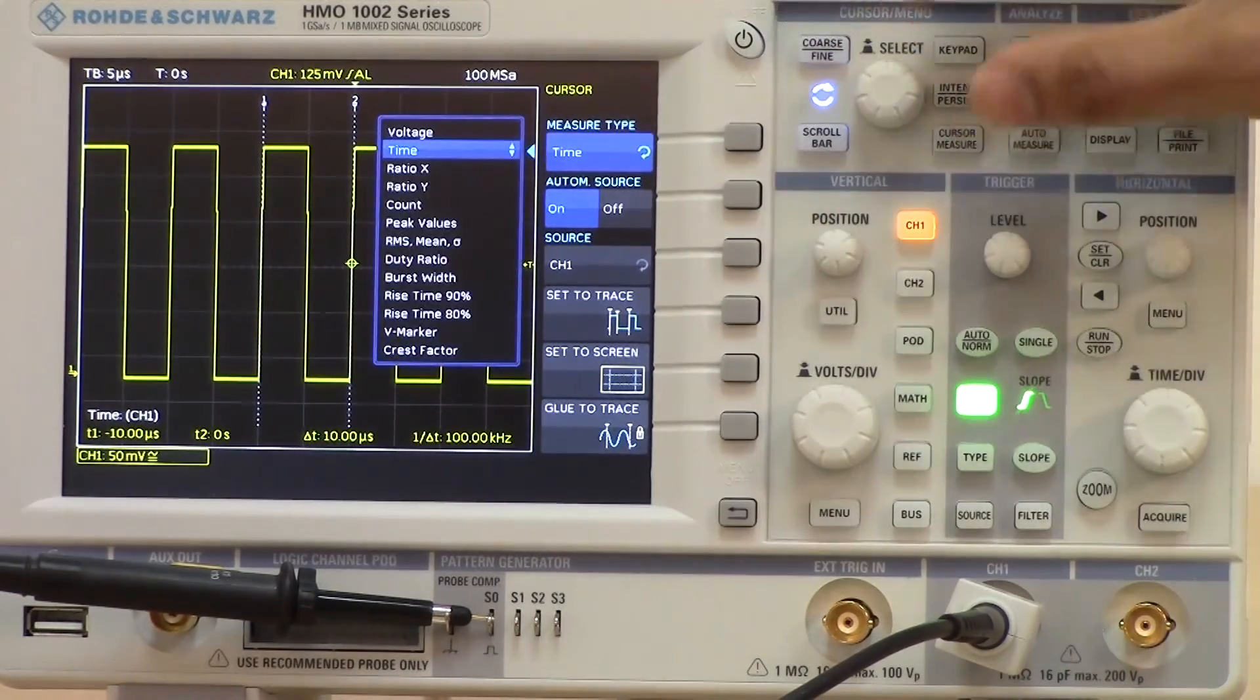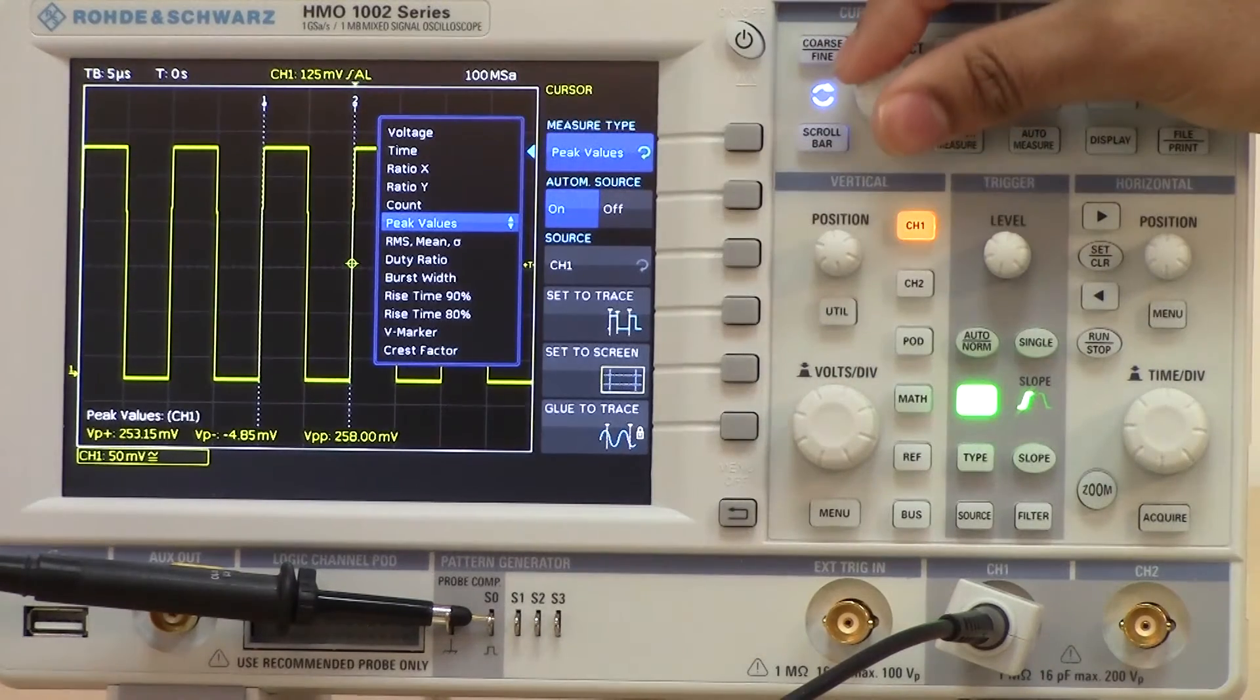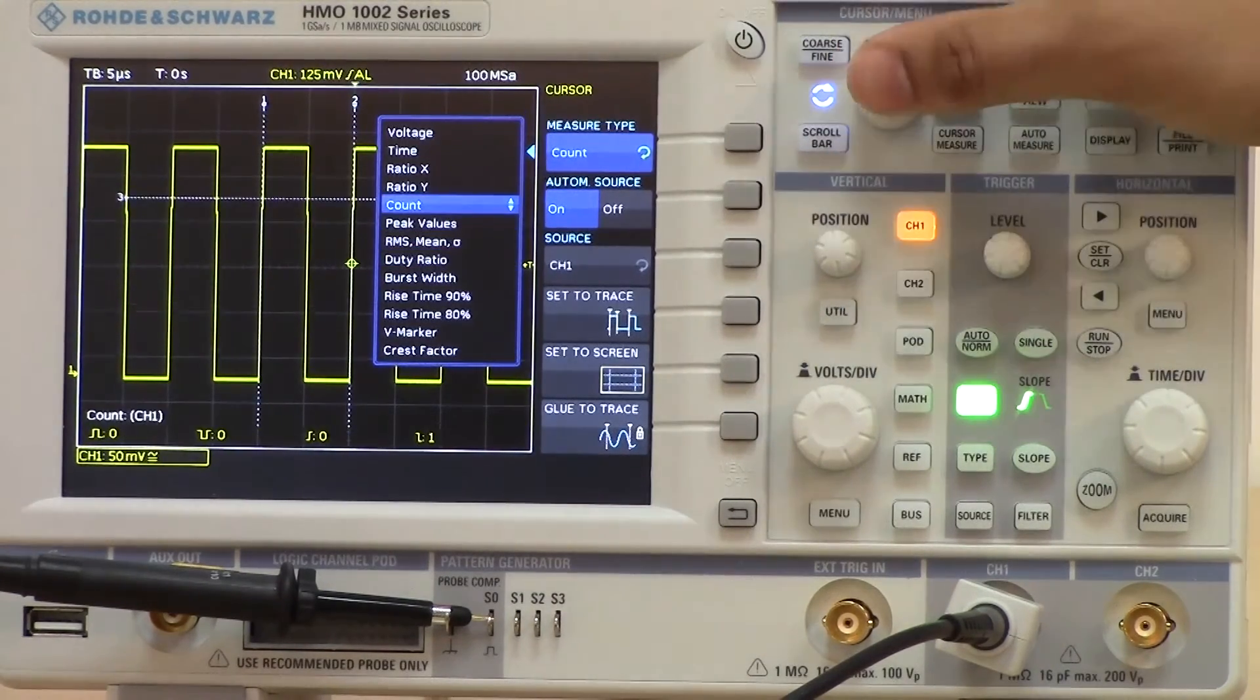With the cursors, as you've seen from this list, you can also have other functionality rather than just your traditional voltage and time. For example, count.